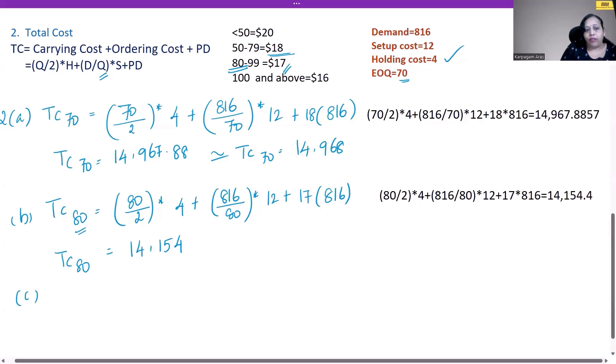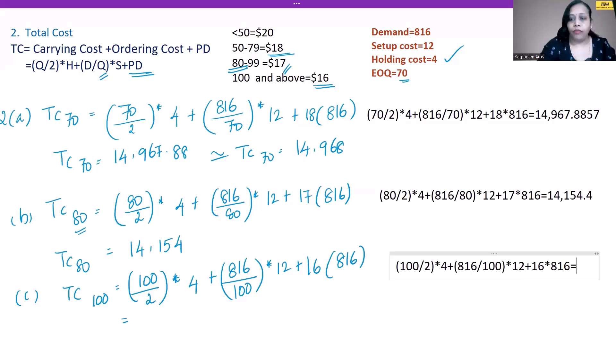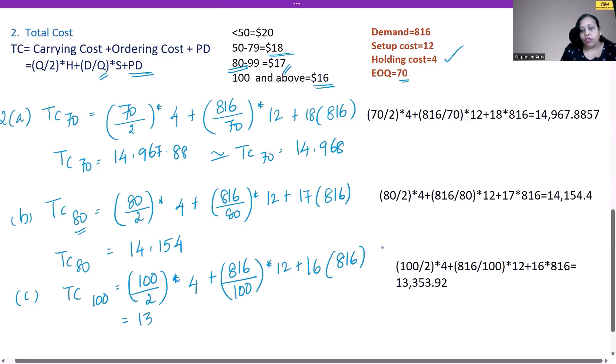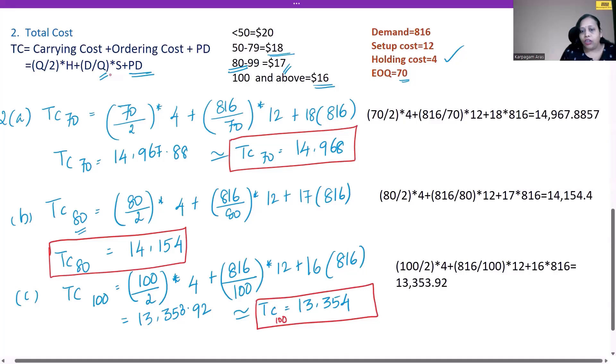Now let's calculate for the next level, TC at 100. This is 100 units divided by 2 × holding cost 4, plus demand 816 ÷ the quantity, which has changed to 100, × setup cost 12, plus the price point P × D. The price point—what is the price point here? 100 units and above will attract only $16 × 816, which gives us 13,353.92. TC at 70 is 14,968, TC at 80 stands at 14,154, and TC at 100 stands at 13,354.